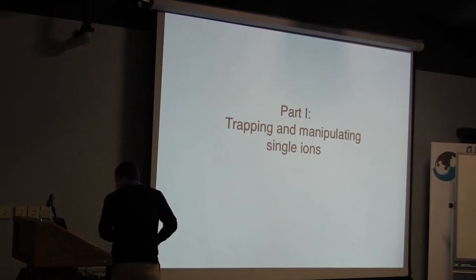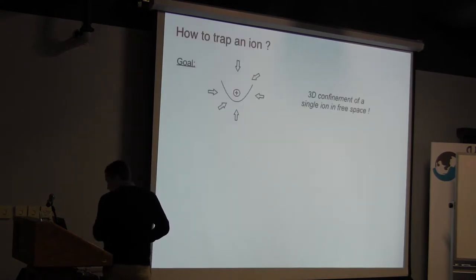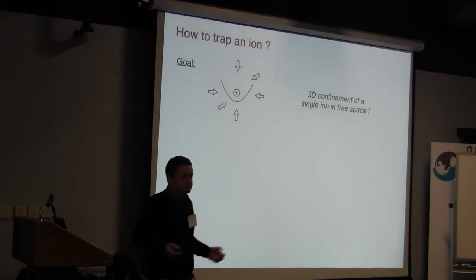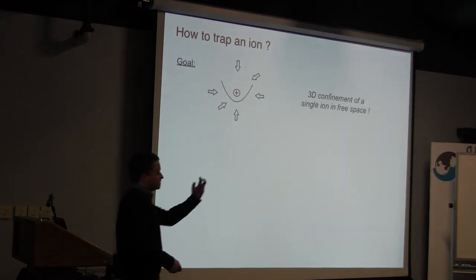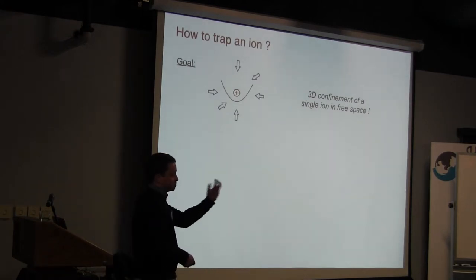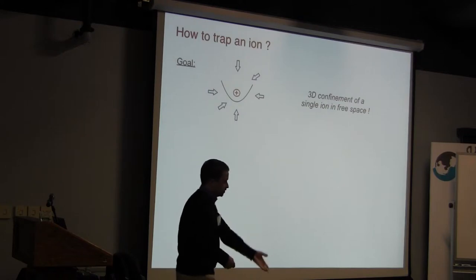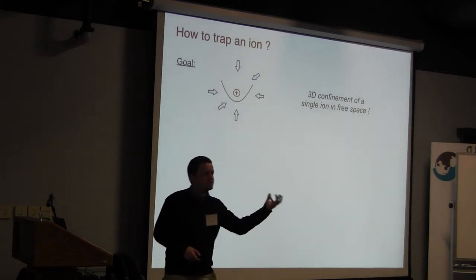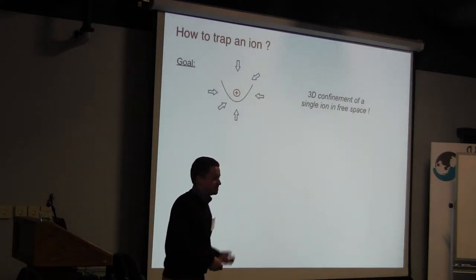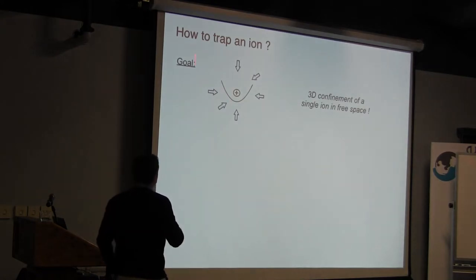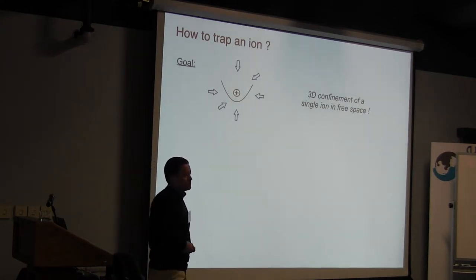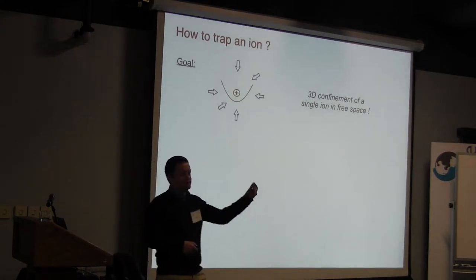Let me start with part one and first ask a very simple question. We want to manipulate ions using quantum physics — we can't just put them on the ground and do something with them, we have to hold them in free space so we can have free space coherence. So the first goal is to trap the ion in some region of free space.